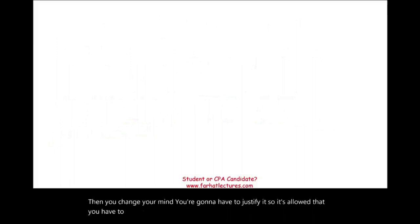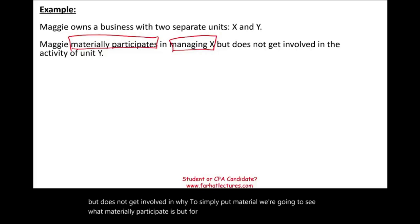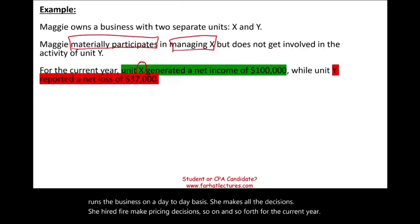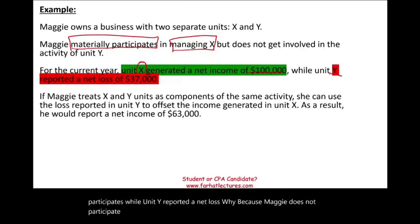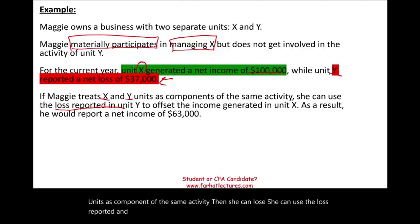Let's look at examples to illustrate the importance of grouping. Maggie owns a business with two separate units, X and Y. Maggie materially participated in managing X but does not get involved in Y — she runs X on a day-to-day basis, makes all the decisions, hires, fires, makes pricing decisions. For the current year, unit X generated income of $100,000, while unit Y reported a net loss. If Maggie treats X and Y as components of the same activity, she can use the loss from Y ($37,000) to offset the income from X. They net out as one unit.